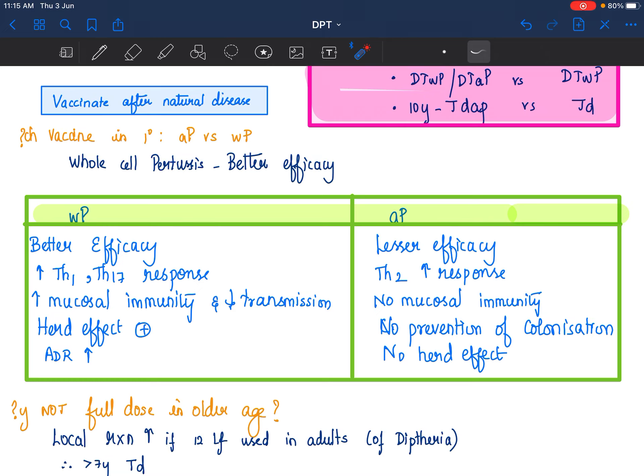Compared to those countries where there is not much of a resurgence, they have continued whole cell pertussis. So, always stick to whole cell pertussis wherever possible unless parents specifically insist they want only the painless vaccine or acellular pertussis.